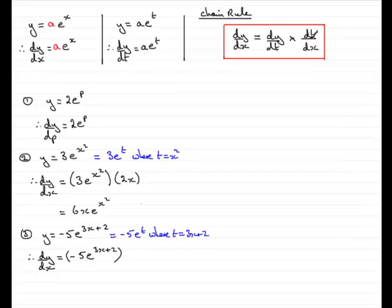Then we multiply it by dt dx. But t equals 3x plus 2. So if we differentiate 3x plus 2 with respect to x, we're just going to get 3. So tidy it up. Minus 5 times 3 is minus 15. And then we've got e to the power 3x plus 2.